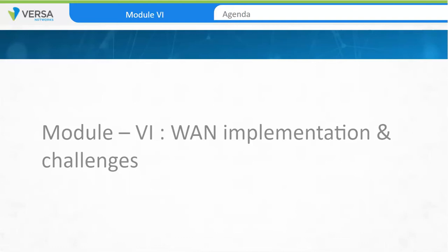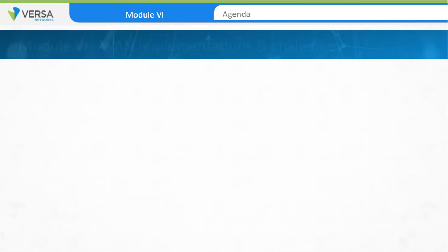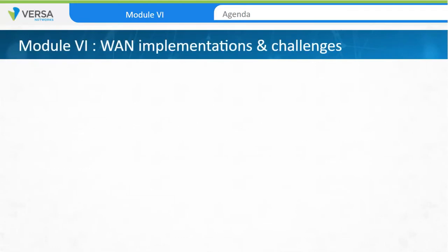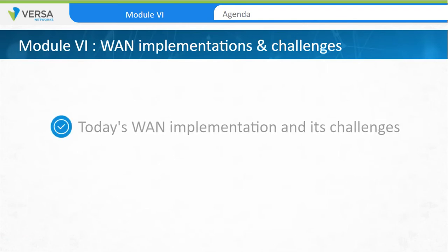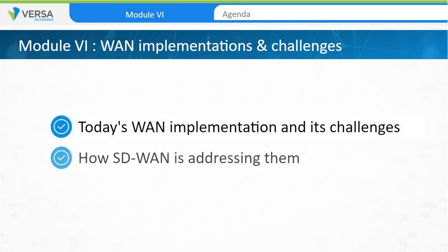Welcome to Module 6 of VersaEssentials: WAN Implementation. In this module, we'll discuss today's WAN implementation and its challenges, how SD-WAN is playing a key role in making the implementation process agile, and how it can deliver a true borderless networking experience to customers.